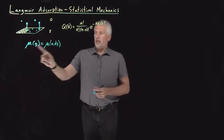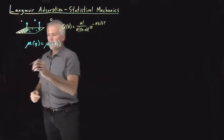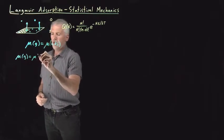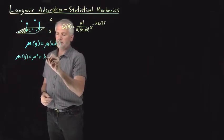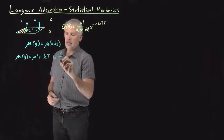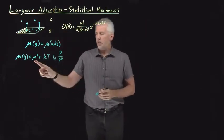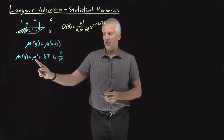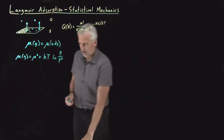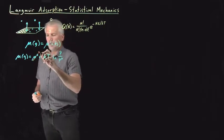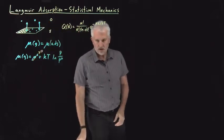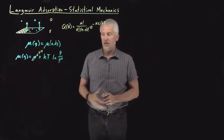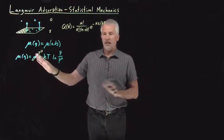In the gas phase, we know the chemical potential of a gas is the standard state chemical potential plus kT log of the pressure over the standard pressure. To make things qualitatively simpler, we'll assume we're working under conditions where the standard state chemical potential is zero — we've chosen a zero of energy such that the chemical potential is zero for the gas in its standard state.